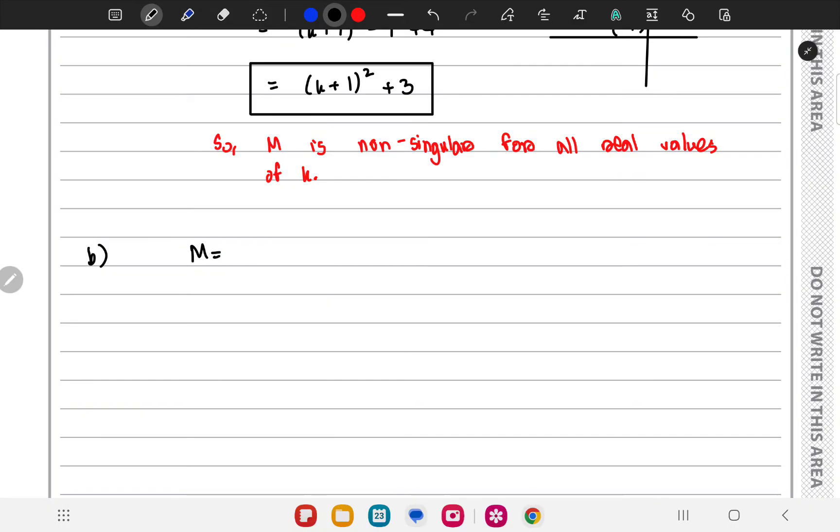If M is A, B, C, D, M inverse is 1 by determinant of M times D minus, this is minus B, minus C, and A over here.